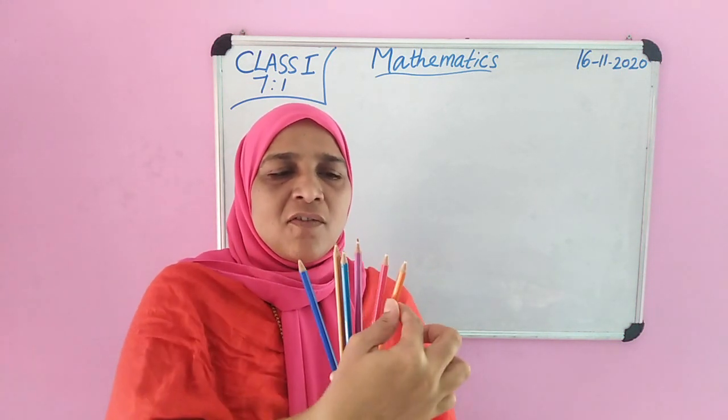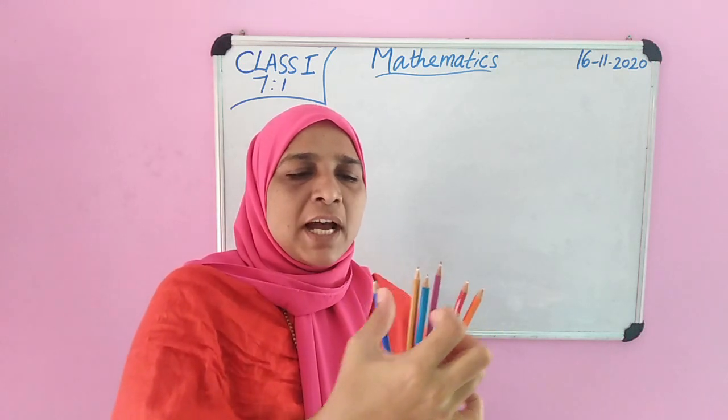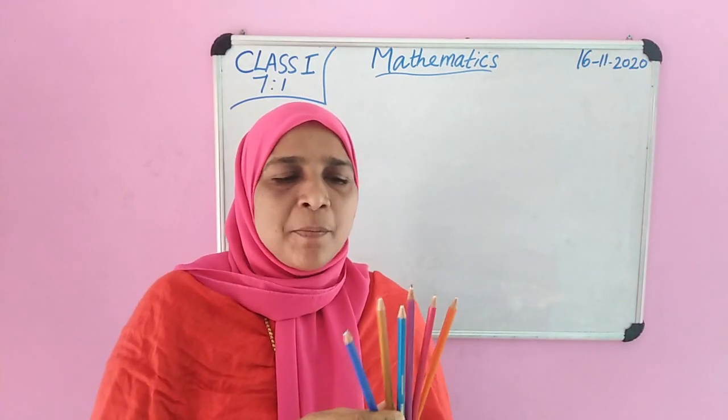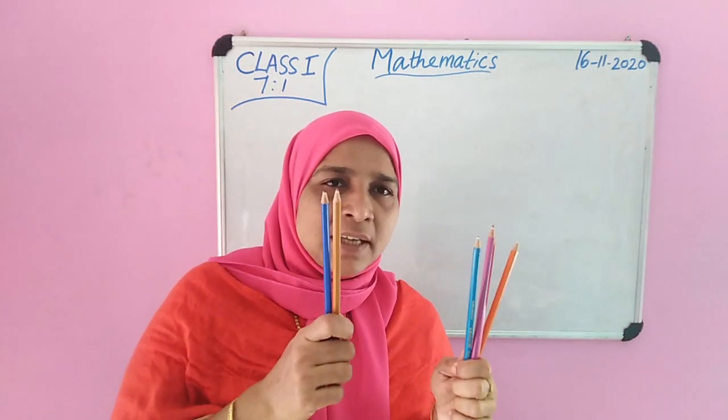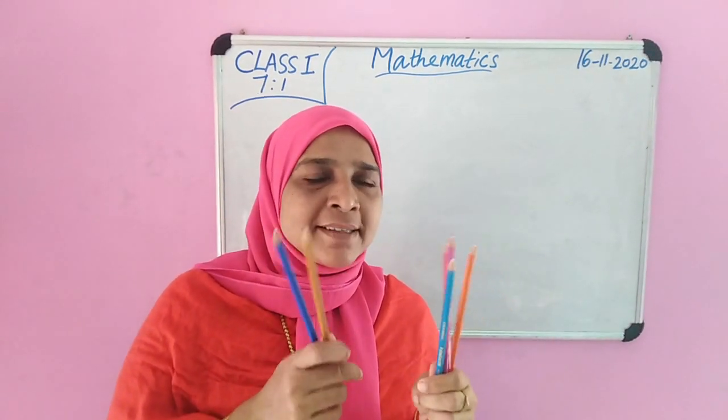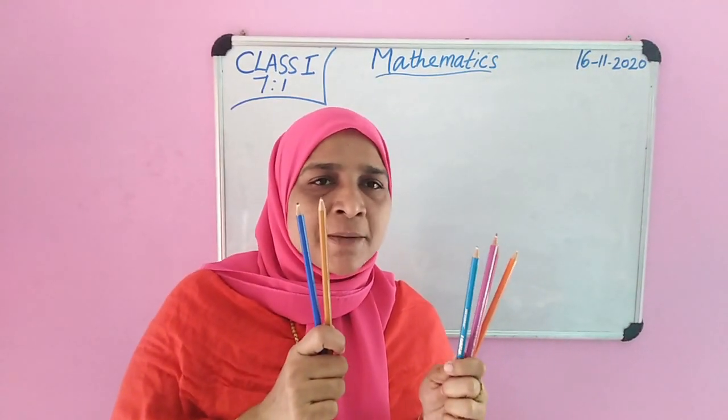1, 2, 3, 4, 5, 6. 6 pencils. 4 and 2 more makes 6. 4 and 2 more makes 6.